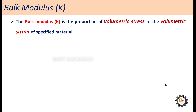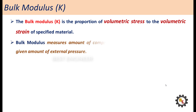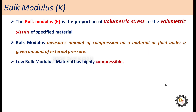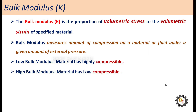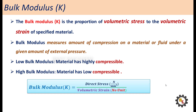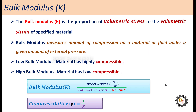Next, bulk modulus. The bulk modulus is the proportion of volumetric stress to the volumetric strain of a specified material. Bulk modulus measures the amount of compression on a material or fluid under a given amount of external pressure. If a material has high compressibility, it has a low bulk modulus. If a material has low compressibility, it has a high bulk modulus. The bulk modulus is the ratio between direct stress or volumetric stress to volumetric strain. Compressibility is the inverse of bulk modulus.